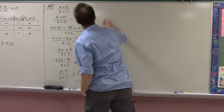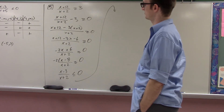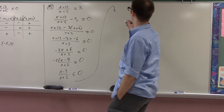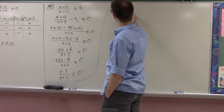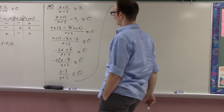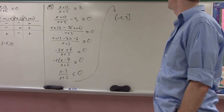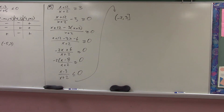Now it's just a matter of solving this inequality. The answer is all the numbers between negative 2 and 3: 3 inclusive, negative 2 exclusive. So that is solving inequalities. I skipped the chart that time because I did it in my head.